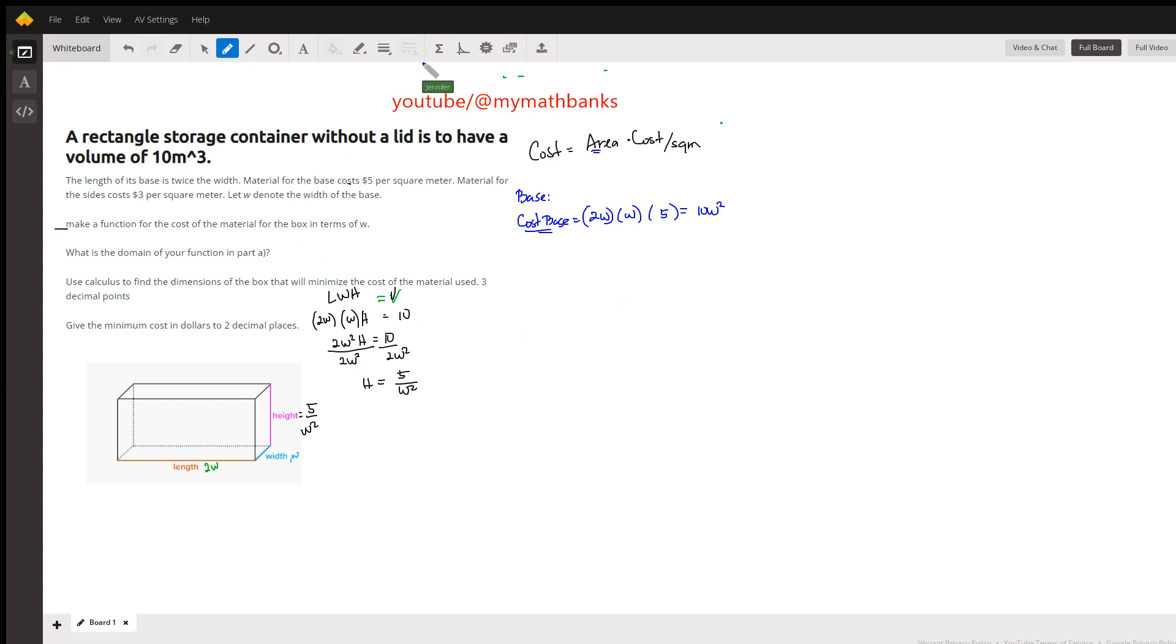So now that we're done with the base, now you have how many sides? You have four sides. I'm going to be talking about this side right here first, and I'm going to call that cost sides. The cost of sides, well, we need to find the area of the sides. Well, the sides is 5 over w squared, that's the height, the width is w, that's one side, but you have two of them, so you have to multiply by 2, and then the cost of area per side is 3.